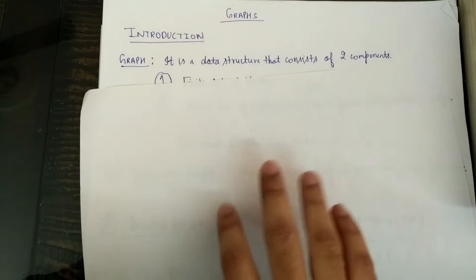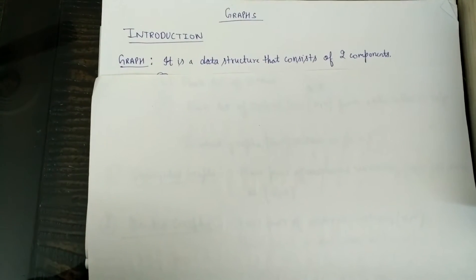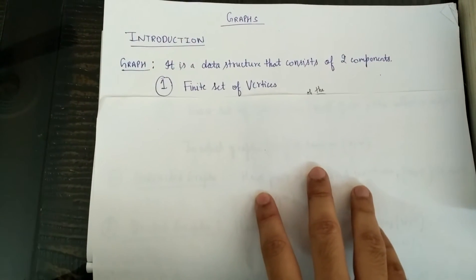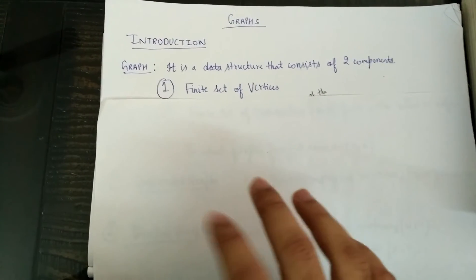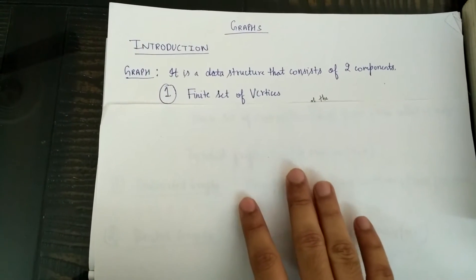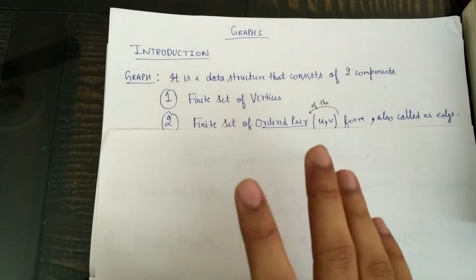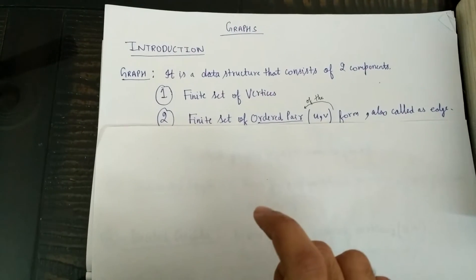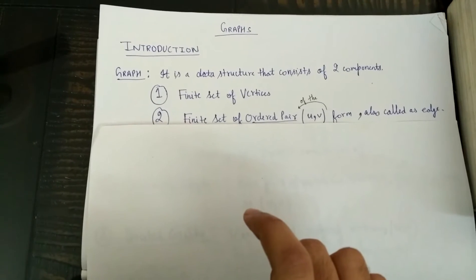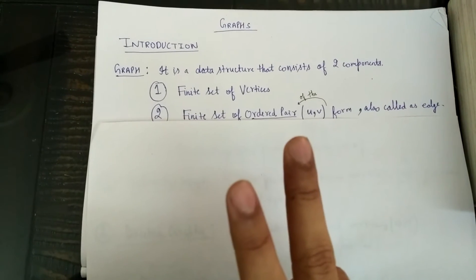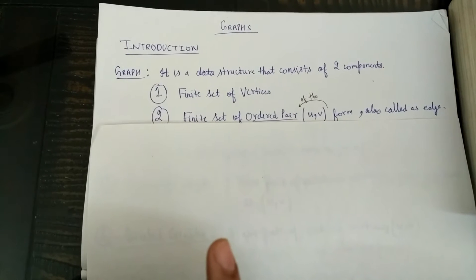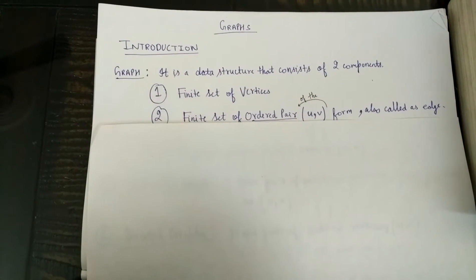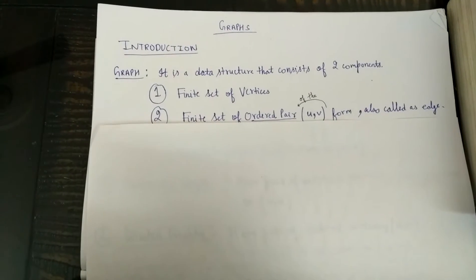Graphs are a data structure that consists of two components. First, it contains a finite set of vertices. Second, it contains a finite set of ordered pairs of the form UV, which are also called edges. So a graph consists of a set of vertices and a set of edges, which together comprise a whole graph.